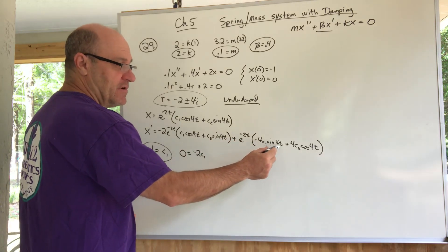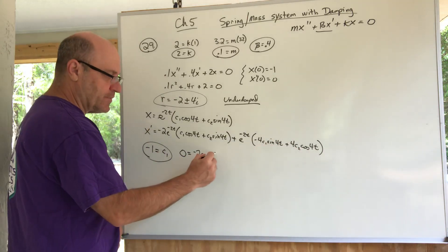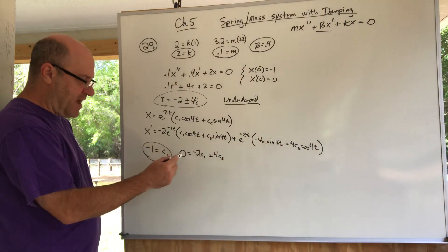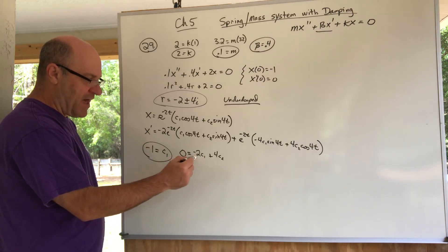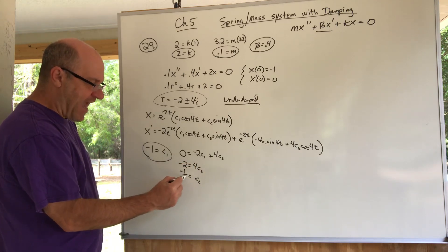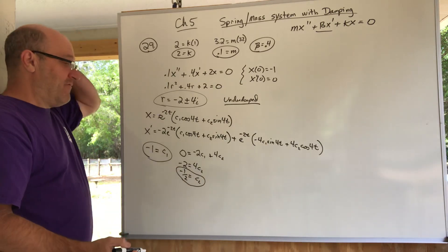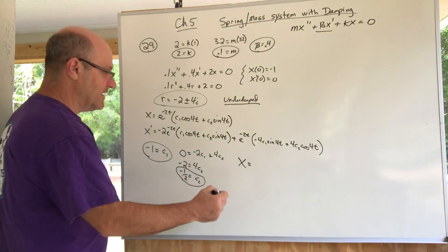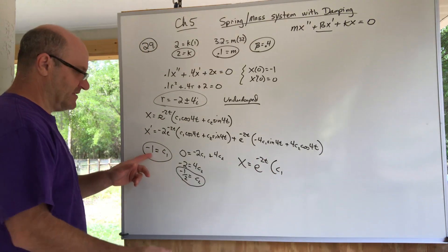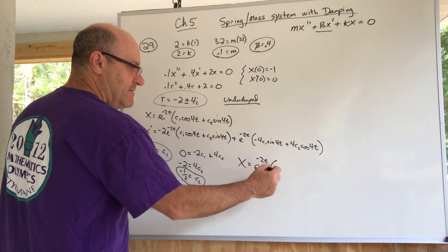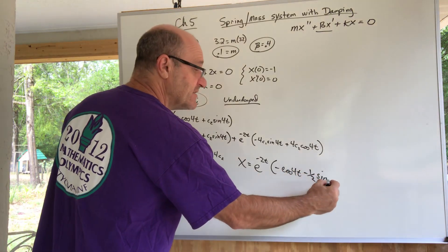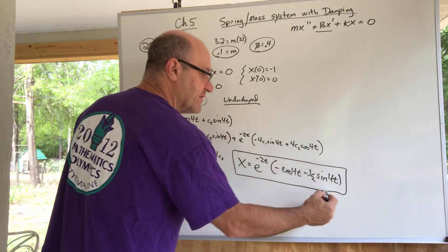Plugging t = 0 into the derivative and substituting c1 = -1 gives a positive two on one side; moving it over gives -2, so 4·c2 = -2, meaning c2 = -1/2. The equation of motion is x = e^(-2t) [-cos(4t) - (1/2)·sin(4t)]. This is the equation of motion for this underdamped situation.